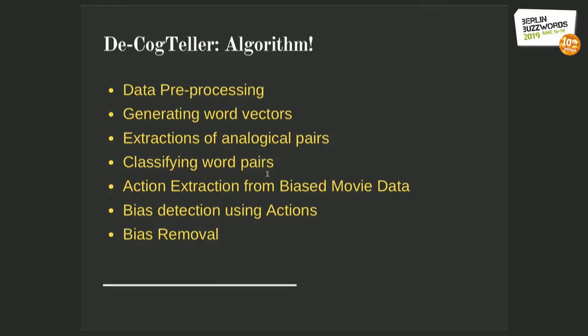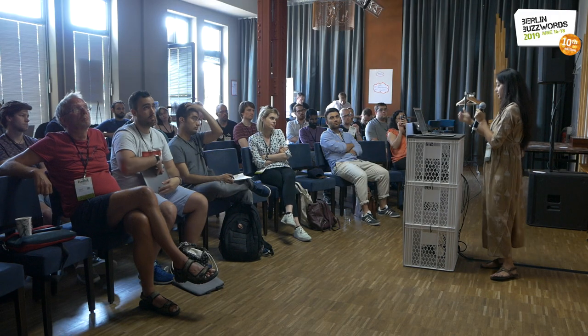This is extremely important because this is how the gender bias gets removed. If you change the gender, you'll understand that a female can also hold that role. The De-Cockteller algorithm works by: pre-processing your data, generating word vectors, extracting the information, then classifying it in both directions — interchanging the information and checking how well it works. If it works for both genders, there's no bias. If it doesn't work, there's a bias, and you work on it. After that, the bias has been removed. This is particularly designed for the movie data.